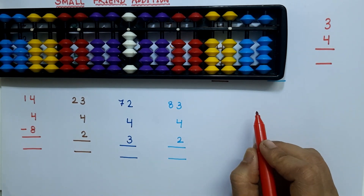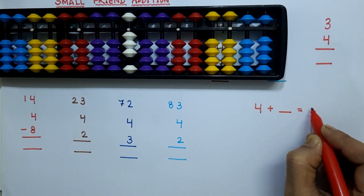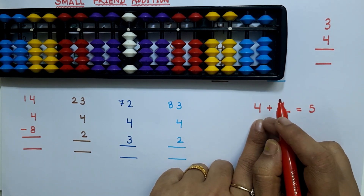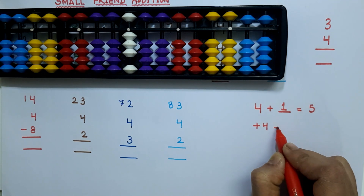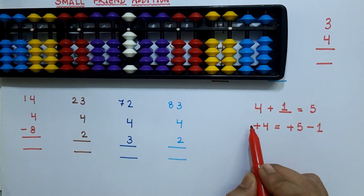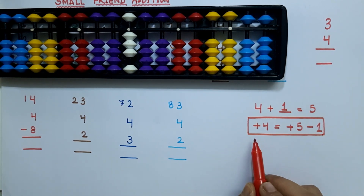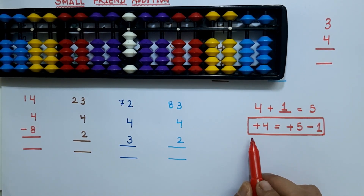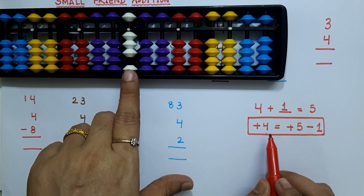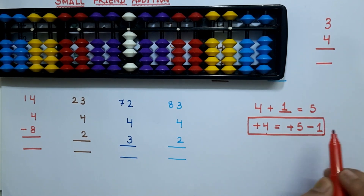Now let's derive this formula. 4 plus how much equals 5? As we know, 4 plus 1 equals 5, so plus 4 equals plus 5 minus 1. We will apply this formula for solving the above examples. When can we apply this formula? If we want to add 4 at the lower deck but we don't have 4 bits available there, but we have the upper bits available — in that situation we apply this formula.